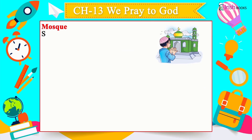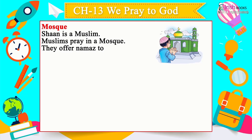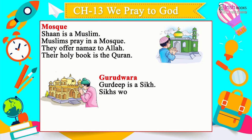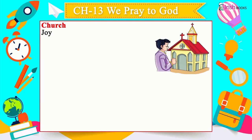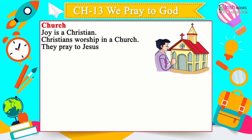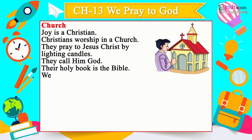Mosque: Shan is a Muslim — Muslims pray in a mosque and offer namaz to Allah. Their holy book is the Quran. Gurudwara: Gurdeep is a Sikh — Sikhs worship God in a Gurudwara and call him Vaheguru. Their holy book is the Guru Granth Sahib. Church: Joy is a Christian — Christians worship in a church and pray to Jesus Christ by lighting candles. Their holy book is the Bible.